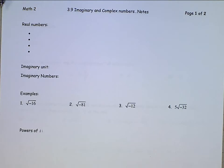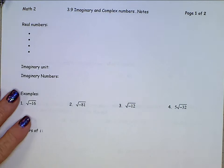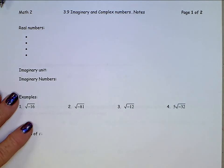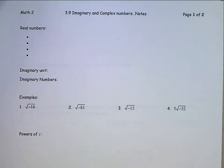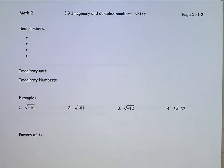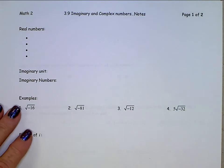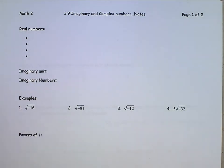This is Math 2, Section 3.9, Imaginary and Complex Numbers. These notes are different than what's normally in your module packet. I wrote these notes, so you're going to need to insert them into your binder right in front of Section 3.9 that's in there.